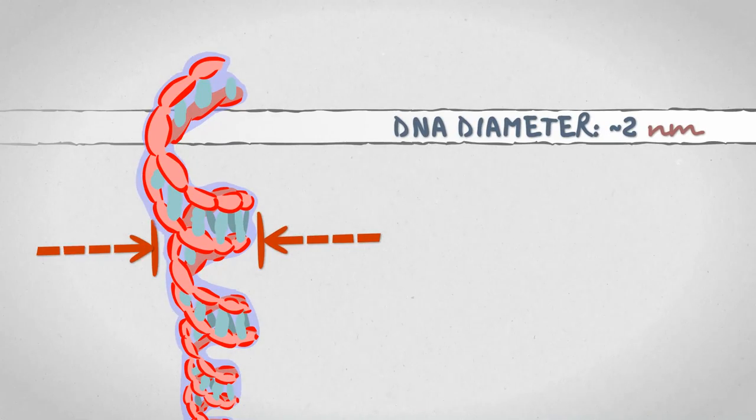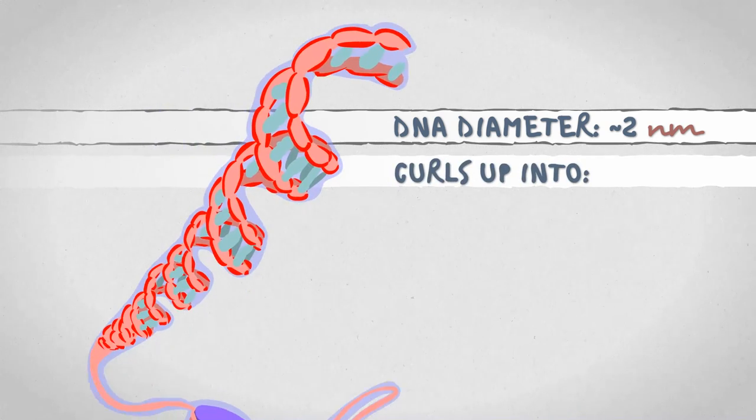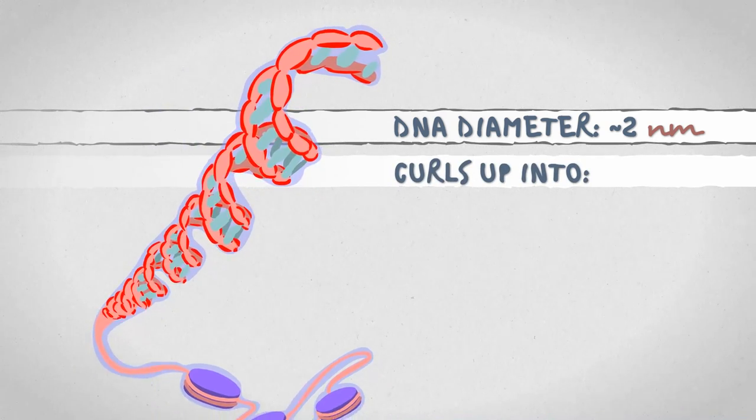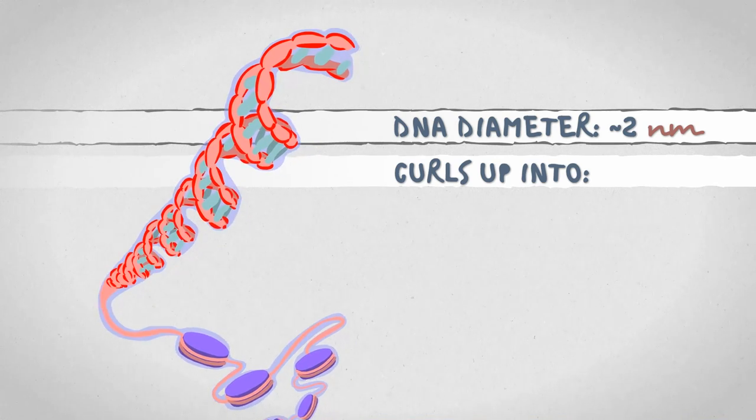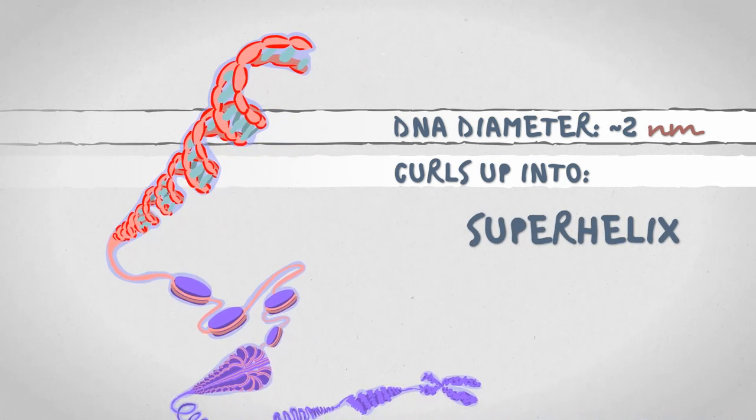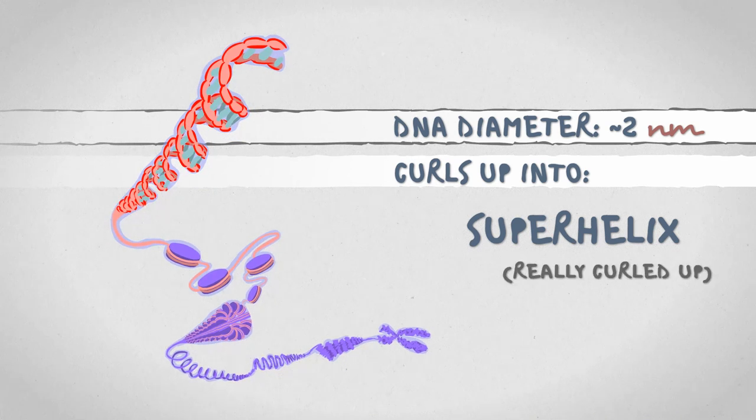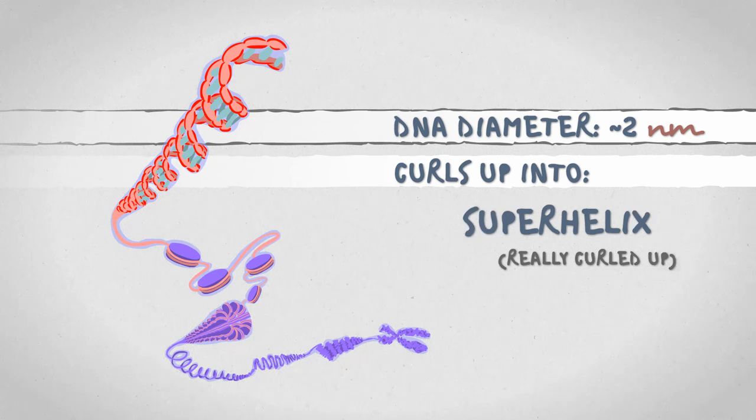First of all, DNA is very, very thin. And second, with the help of special proteins, it can be curled up many times over into what is called a superhelical structure. Which is just a fancy term for curled up. This makes DNA take up way less space, and the process is called DNA packaging.